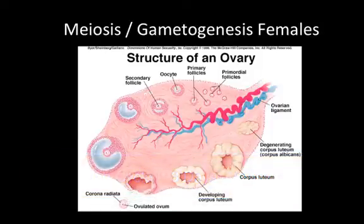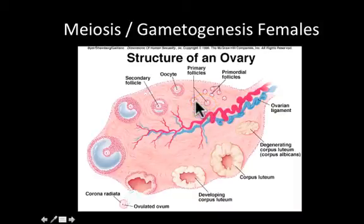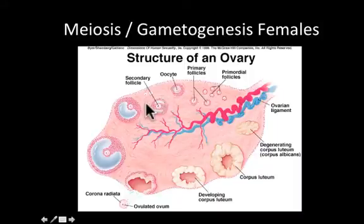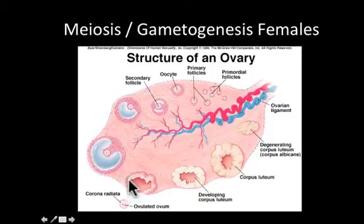The ovarian cycle is a 28-day cycle that mirrors the menstrual cycle. In the ovarian cycle, one egg from one of the ovaries is chosen to start development, changing from a primary follicle into an oocyte. Developing alongside the oocyte are supporting cells called follicular cells. As hormones cause the follicle and oocyte to develop, the follicular cells undergo mitosis, causing the follicle to enlarge.